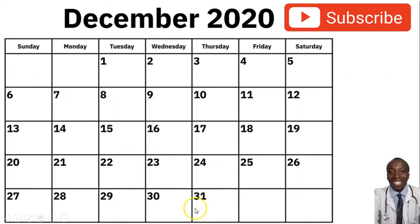Without further ado, we shall go to how you can calculate the most fertile day — you are actually most likely to get pregnant when you have a 35-day cycle. Taking this as an example, this is basically a month of 31 days.